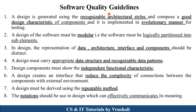The next one is software quality guidelines. As an exam point of view, this is one of the most important questions, so you need to remember all these guidelines by understanding the highlighted words. The first guideline is: a design is generated using a recognizable architectural style — meaning you have to use proper recognizable diagrams like use case diagram, activity diagram, and class diagram, with good design characteristics and all functions implemented in an evolutionary manner. The second guideline is: the design of software must be modular — you should generate the design module by module, for example first a registration module, then a login module. The third guideline is: in design there is a complete representation of data, architecture, interface, and component — all those things should be mentioned in the design.